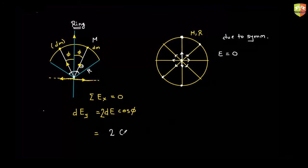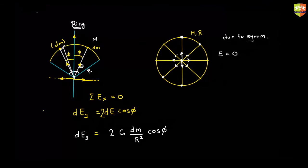dE is G times dm divided by r squared, times cos(φ). The problem is you now have two variables: dm and φ. So you need to write dm in terms of φ. If you zoom in, dm occupies a small arc length dl, because the mass is distributed on the arc.